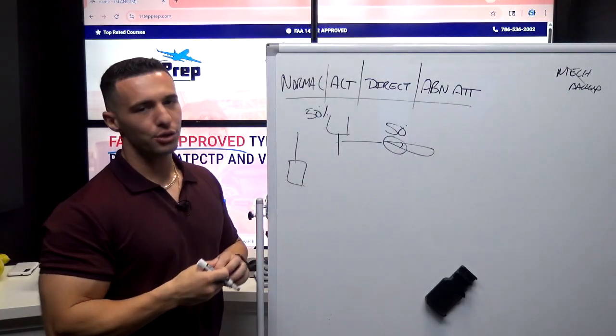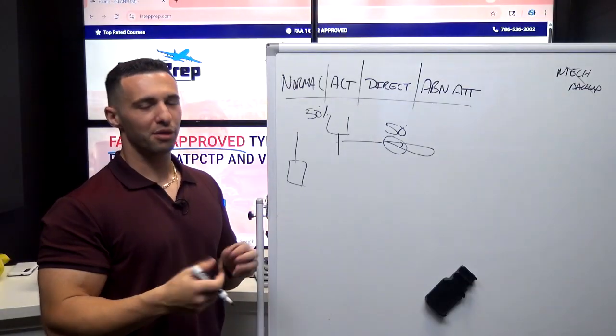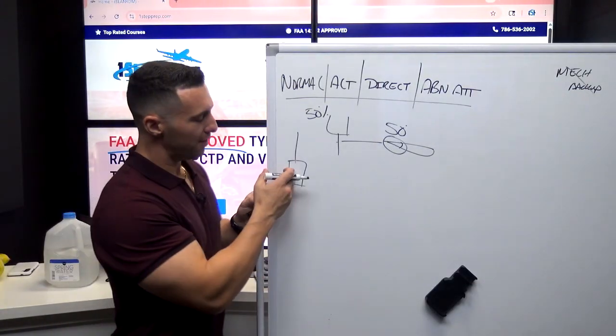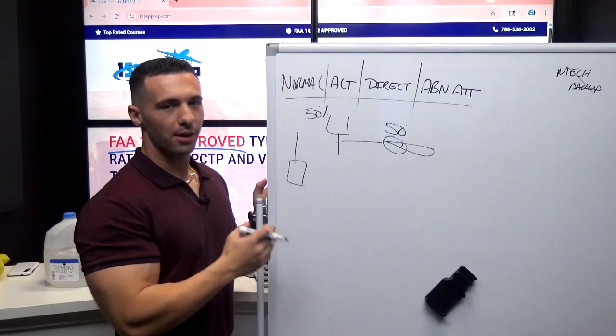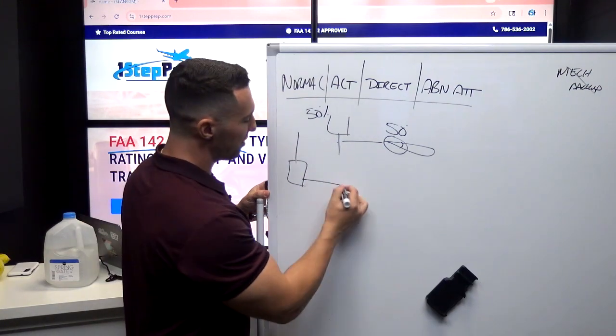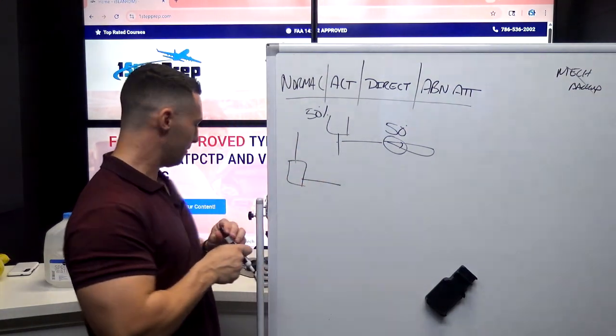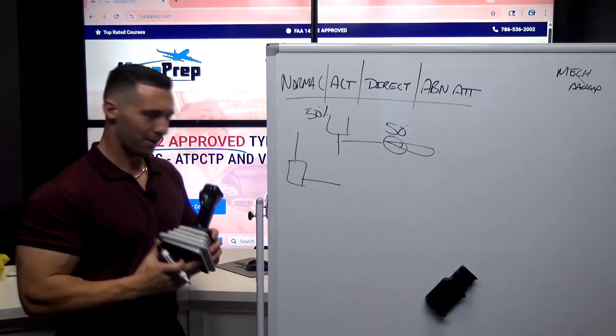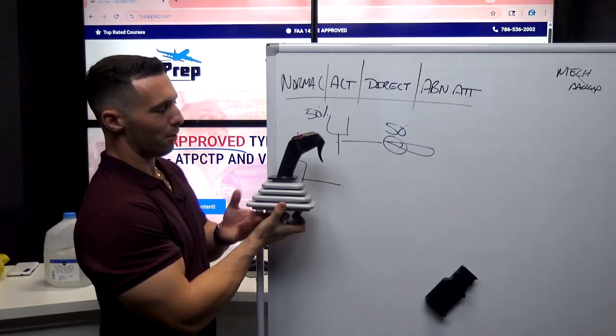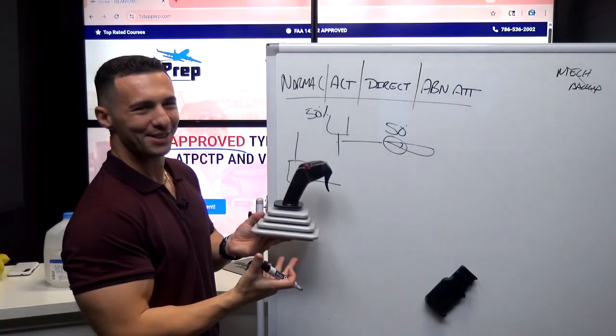That's not necessarily true in the 320 or in an Airbus product because we do have something called, of course, an elevator aileron computer. And your side stick, which is what this horrible drawing is right here. I have a great side stick right here, actually, which is a model from Ben. Thank you, Ben. I'm putting it to good use.